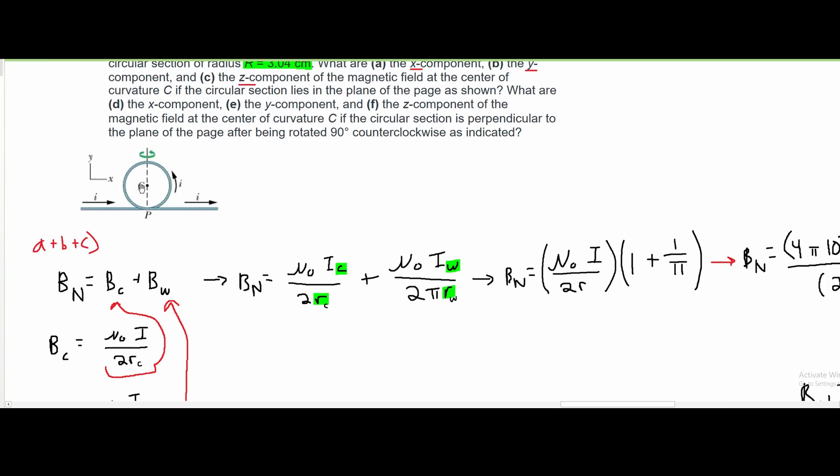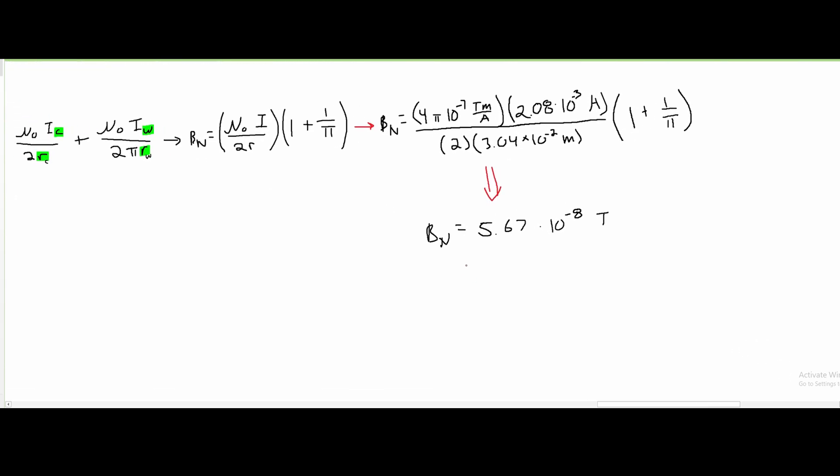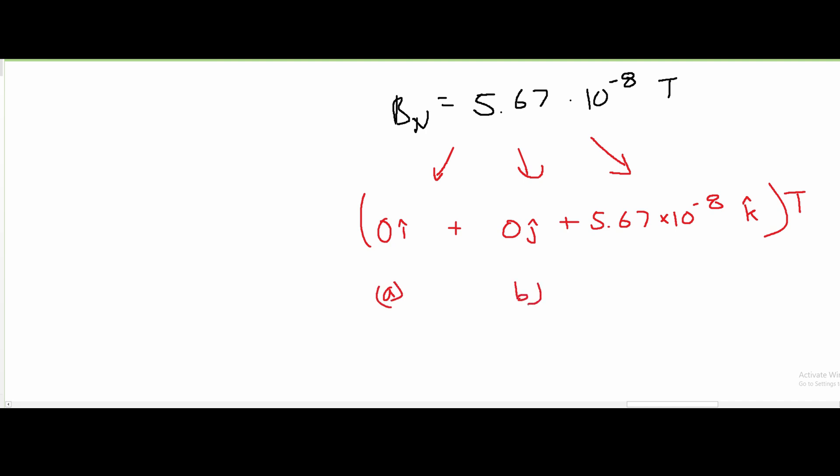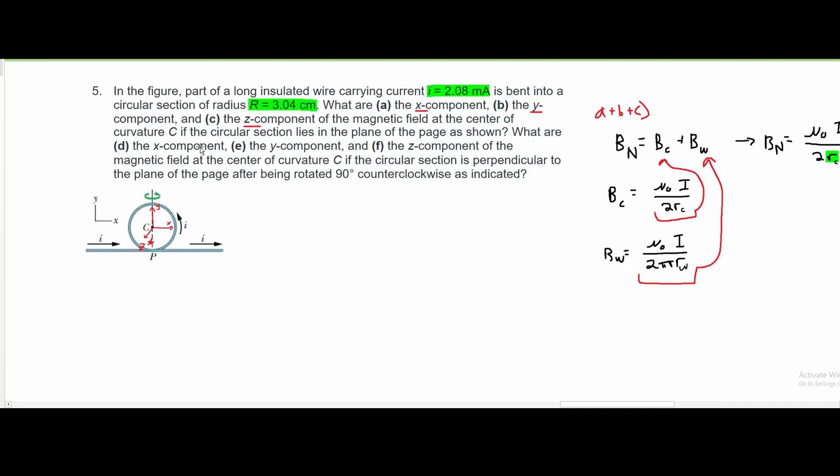Now our C lies in this plane. If we go in here and we draw our y axis like this, and our x axis like this, we can see that it's not moving along either of them. And the only way it would be moving would be in the z axis. So that means our B net is going to terminate into 0 for x, 0 for y, but we are going to have our 5.67 times 10 to the negative 8 teslas for k. And this is the answer for a, b, and c.